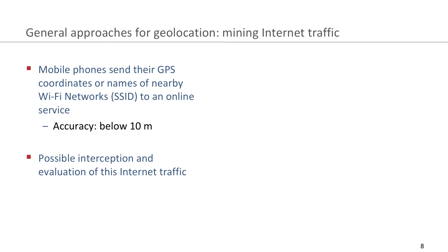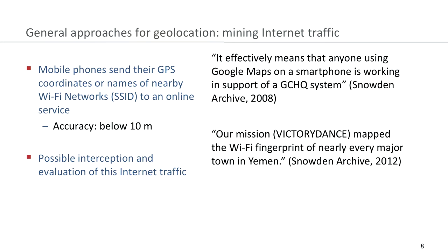Another method I want to present is the mining of internet traffic. Some smartphones send GPS coordinates or the names of nearby Wi-Fi networks — also called SSIDs — to online services. These usually allow the determination of the position at around or below 10 meters. It is certainly possible to intercept this traffic and evaluate the geolocation. One quote from the Snowden archive, issued in 2008, states: 'It effectively means that anyone using Google Maps on a smartphone is working in support of a GCHQ system.' This shows that third parties intercepted that traffic and used it for determining geolocation.